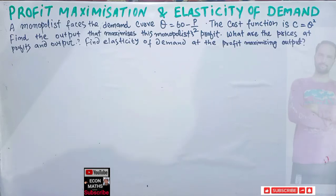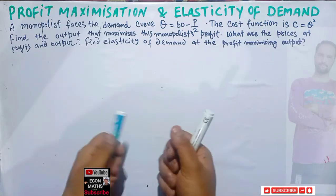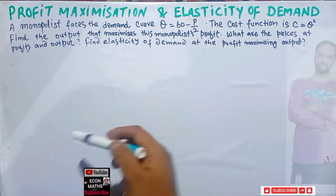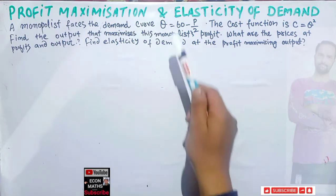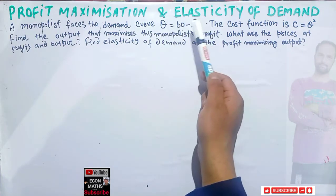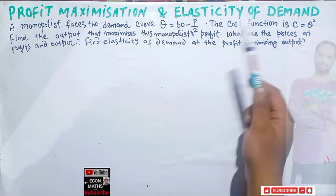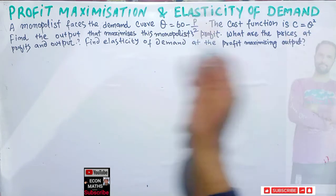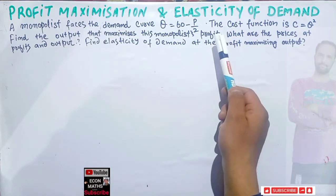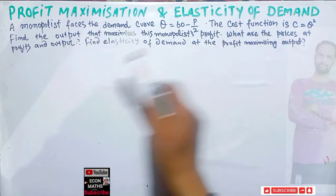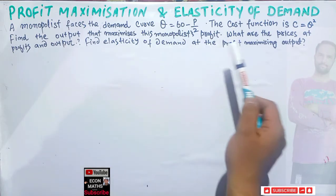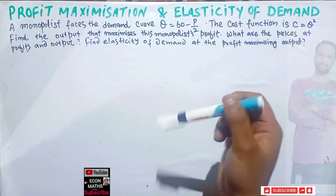In this video we will solve a question on profit maximization and elasticity of demand for a monopolist. The question is: a monopolist faces the demand curve q = 60 - p/2, where q is quantity and p is price. The cost function is c = q². We need to find the output that maximizes profit, the price at that output, and the elasticity of demand at the profit-maximizing output.